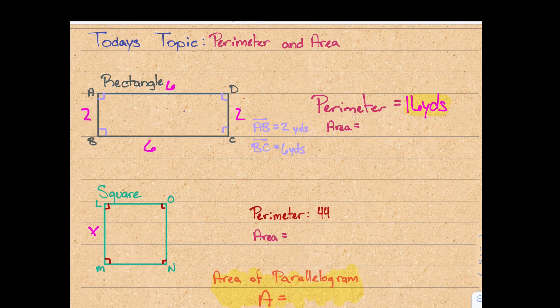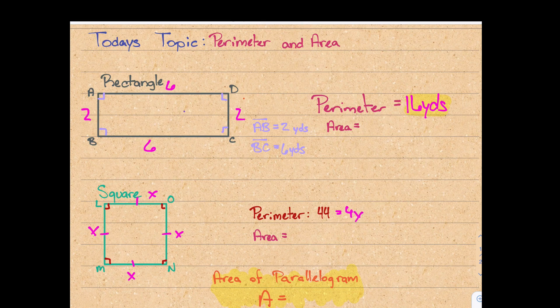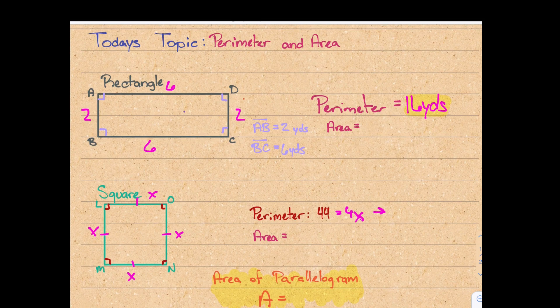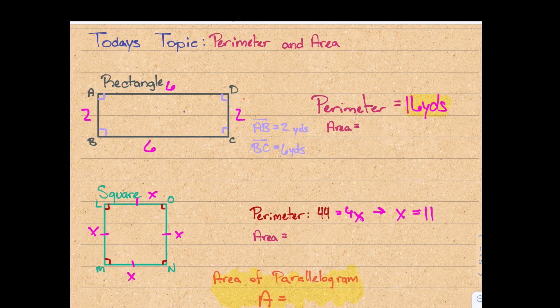So we could just call them x, x, x, and x. Which would give us the equation, if we were to add up all of our sides, 44 equals 4x. Which then we can just divide each side of this equation by 4 to get that the perimeter, or sorry, each side length of this square is 11 units long.